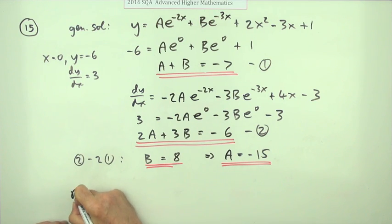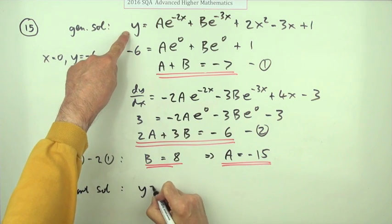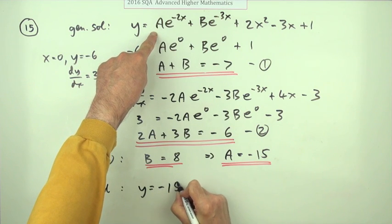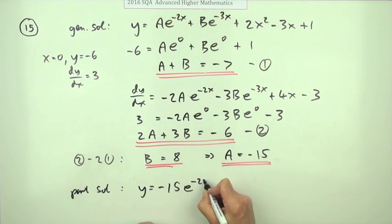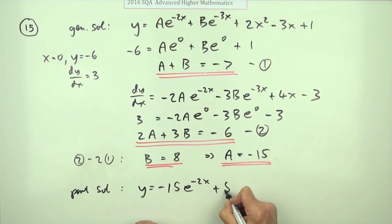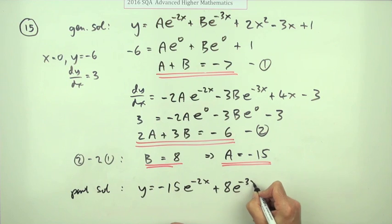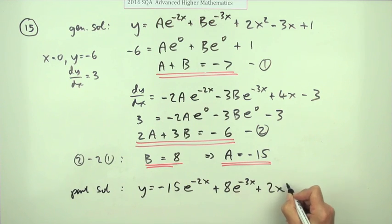Now you can write down the particular solution, which is y equals negative 15e to the negative 2x plus 8 lots of e to the negative 3x plus 2x squared minus 3x plus 1.